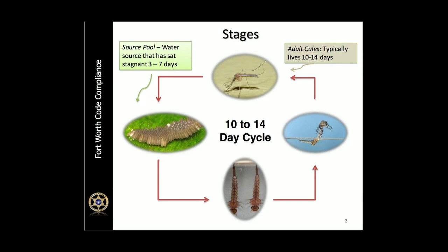A good source also has grass clippings in it or is around grass, kind of marshy areas, because mosquitoes eventually need some nutrients in that water to develop. Swimming pools, rivers, and lakes deeper than one foot are not good source pools. In fact, there's nothing better than a good gully washer rainstorm in the middle of summer to wash out all the stagnant water, because it also washes out the eggs and we have to wait for that water to become stagnant again for mosquitoes to lay eggs.